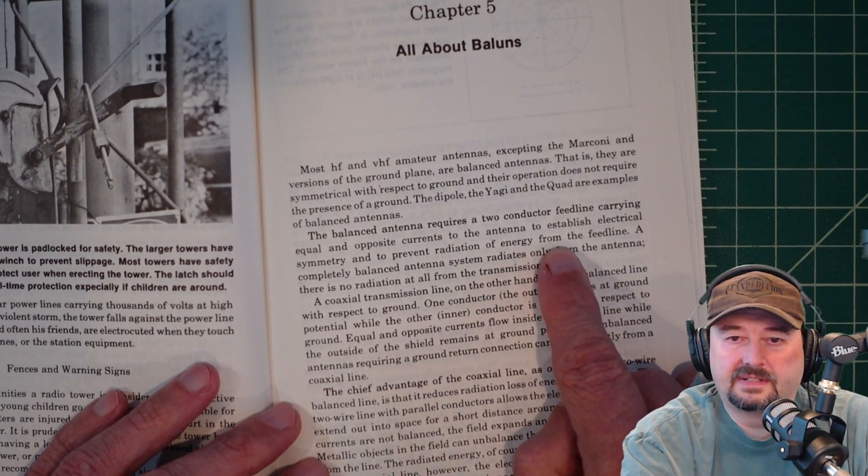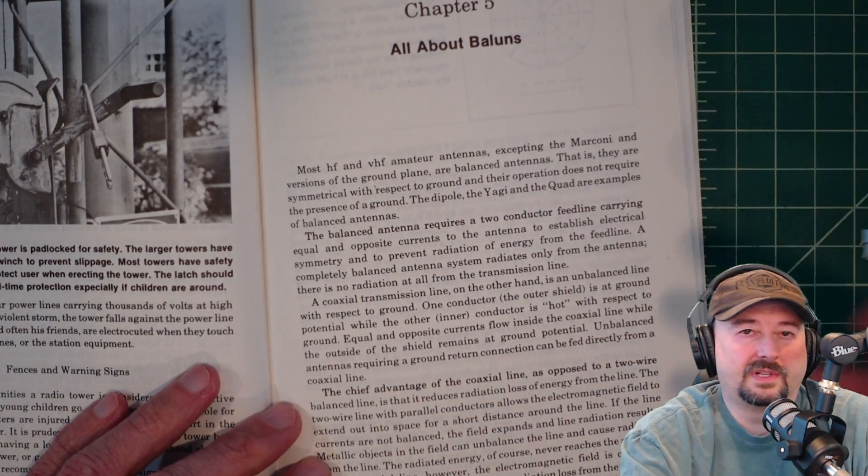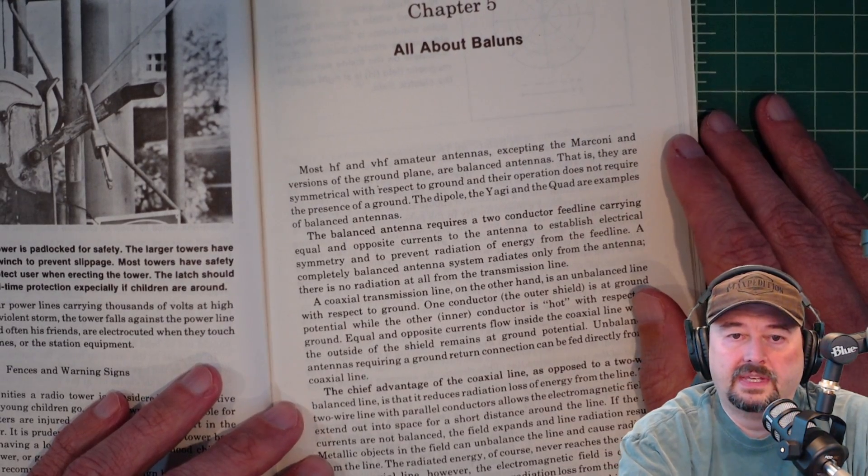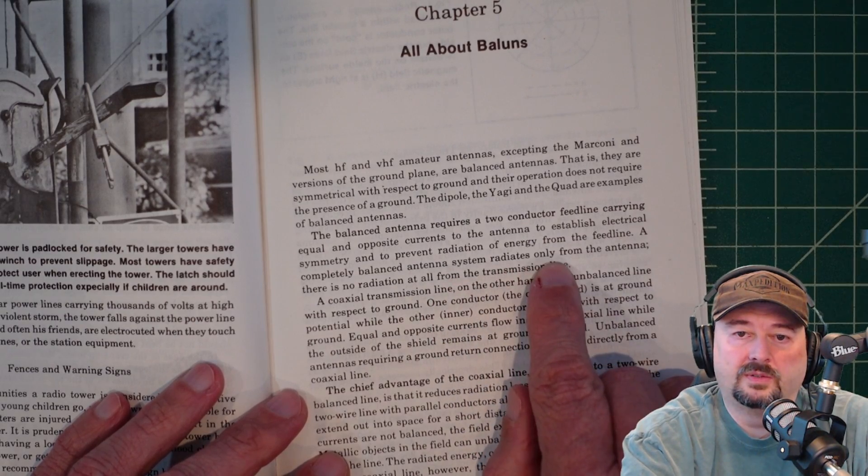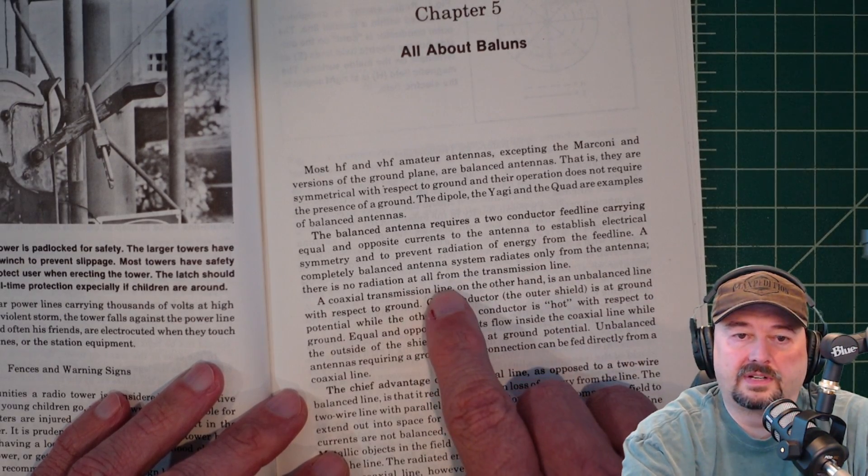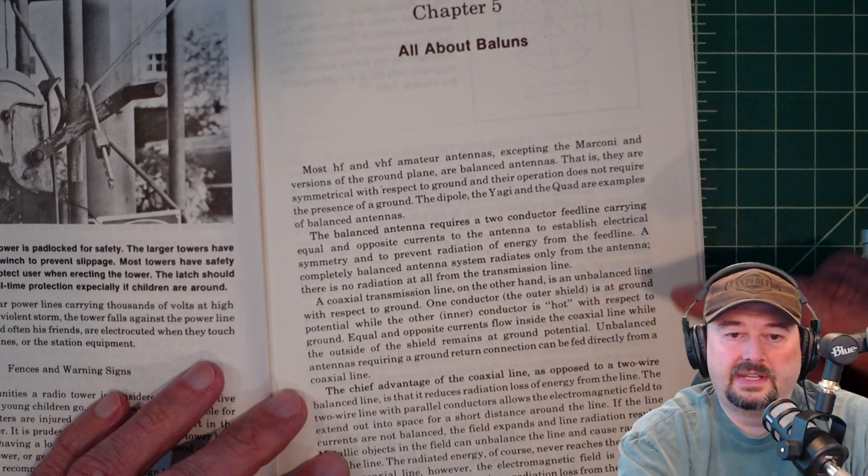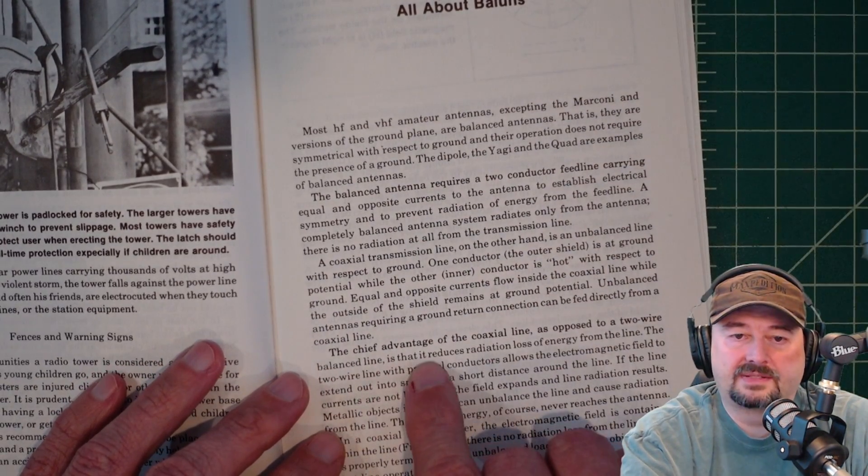What he's talking about there is common mode current. So that's why we talk about balance and chokes a lot on the channel. And he says here, a completely balanced antenna system radiates from only the antenna. There's no radiation at all coming from the transmission line.